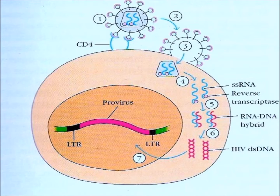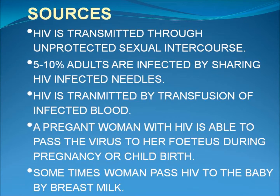New viral RNA is used as genomic RNA and to make viral proteins. New viral RNA and proteins move to the cell surface and a new, immature HIV virus forms. The virus then matures by protease releasing individual HIV proteins.